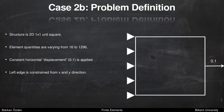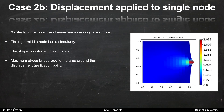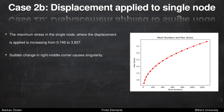For case 2b, we have a 2D 1-by-1 unit square structure. Element quantities are varying from 16 to 1296. A constant horizontal displacement of 0.1 is applied and the left edge is constrained from x and y directions. The stresses are increasing at each step, the right middle node has a singularity, and the shape is distorted. Maximum stress is localized to the area around the displacement application point and increases from 0.7 to 3.8. Sudden change in the right middle corner causes the singularity.